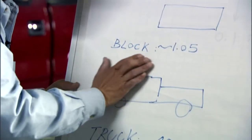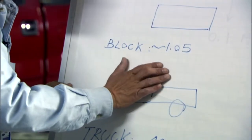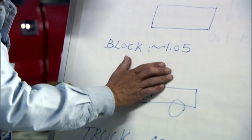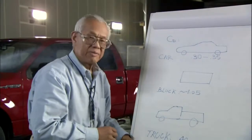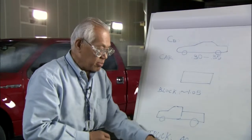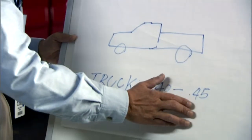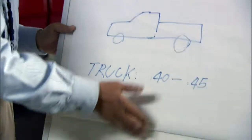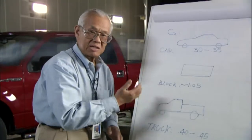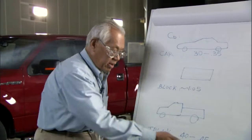Consider a block — it's about 1.05. For a truck, most are in the range from 0.40 to 0.45. In this case, our vehicle is coming in at the low end, at 0.40.